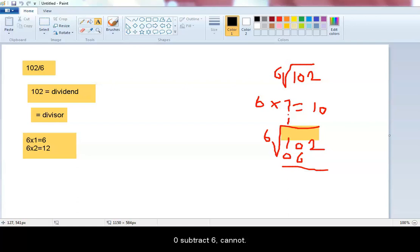0 subtract 6 cannot. We are going to borrow 1 to the 0 to give us 10. 10 subtract 6 gives us 4. This is going to be 0 because 1 has been taken over to this side.